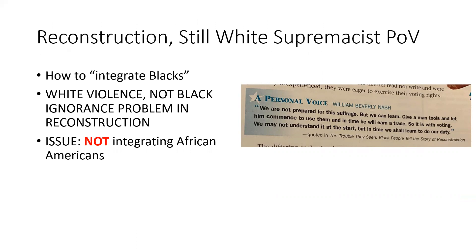In his analysis of Reconstruction, Loewen analyzes how Reconstruction is taught in textbooks. He says that more contemporary textbooks are less explicitly white supremacist, but they are still invoking a white supremacist point of view. The textbooks present part of the story of Reconstruction as needing to help Black people integrate into the United States as equals, and he found that Black people were still painted as dependent, needing help from white Americans.